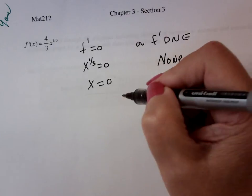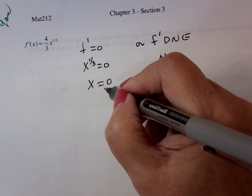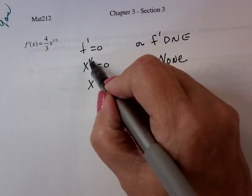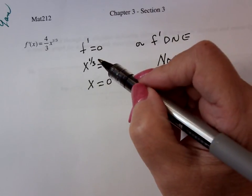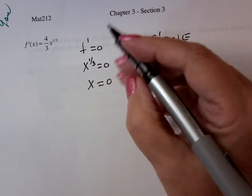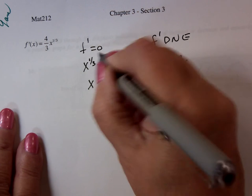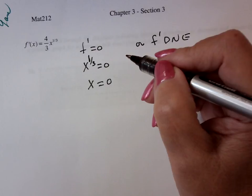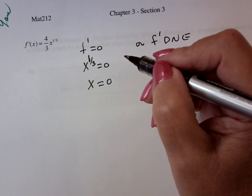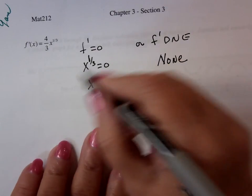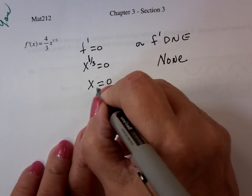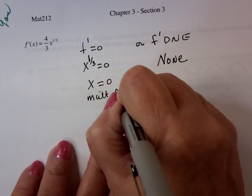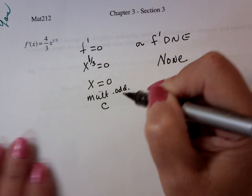The issue ends up being is this multiplicity of this guy even or odd? What's the numerator? Numerator is a power. It's odd, right? So that says because this is a one, it's going to be an x to the one power whenever you go to square both sides or cube both sides. It's multiplicity odd. So it changes.